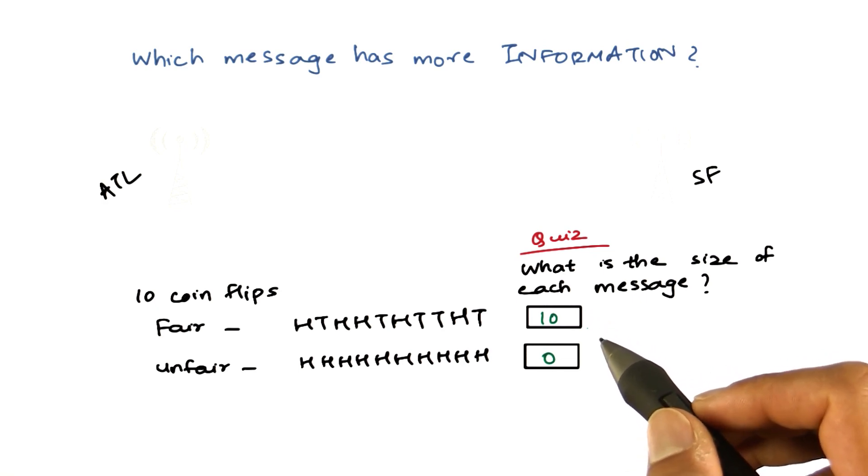If the sequence is predictable, or it has less uncertainty, then it has less information.